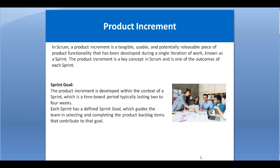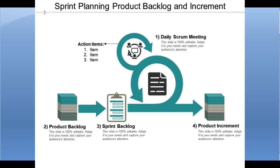At the end of each sprint we have a product increment. For example, consider an e-commerce solution which has four features required: the customer can login into the application, the customer can see the product catalog, the customer can add a product to the shopping cart, and the customer can do the payment through a credit card or debit card. These are the four features required in an e-commerce solution.